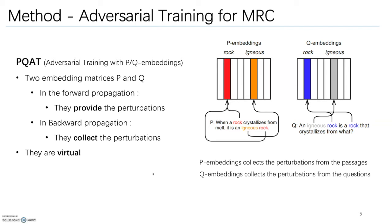To adapt standard adversarial training method for MRC tasks, we propose PQAT. We create two embedding matrices P and Q. They are used for providing and collecting perturbations.